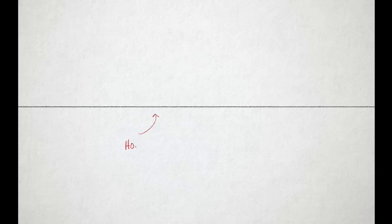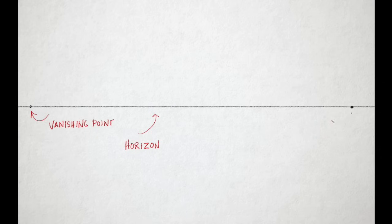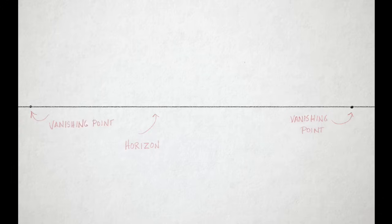The first step is to define the horizon line. Theoretically the horizon line is the line that divides the sky from the ground, and since this is two-point perspective we'll place two vanishing points on the horizon line. It doesn't matter where you place them, but it's a good idea to place them far apart from each other, and they must be on the horizon line.